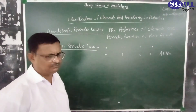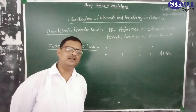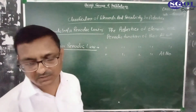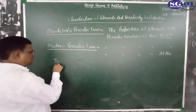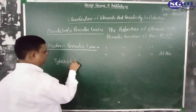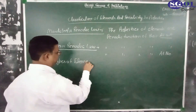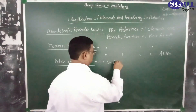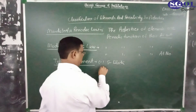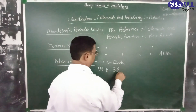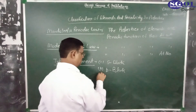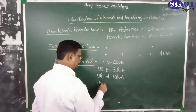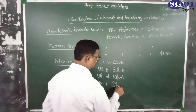After that, elements are classified into four blocks — this is known as the types of elements. The first one is the S-block element, the second one is the P-block element, the third one is the D-block element, and the fourth one is the F-block element.